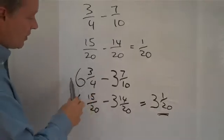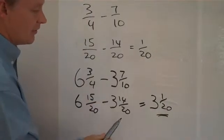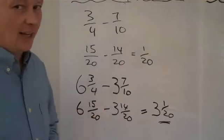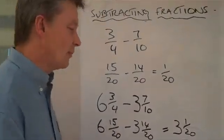So the answer to six and three quarters, take away three and seven tenths is three and one twentieth. Okay, let's make it just a little bit more difficult.